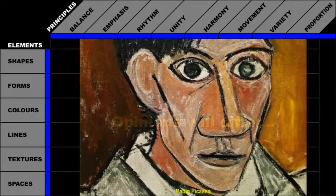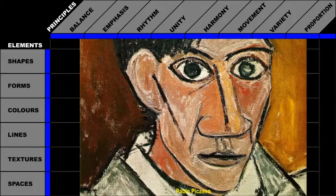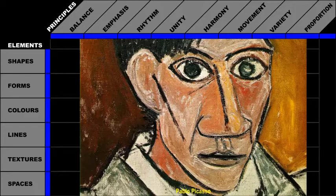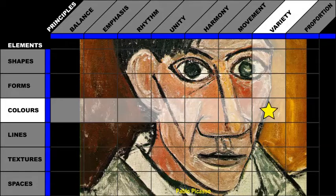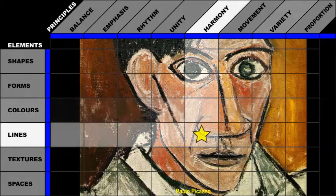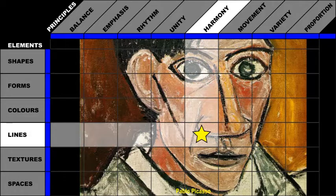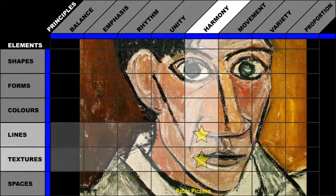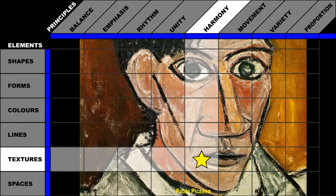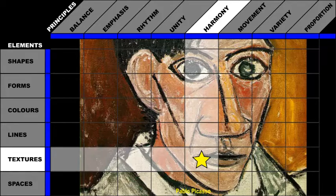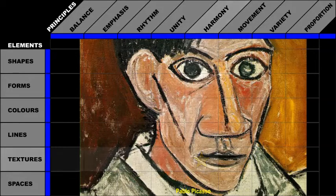Let's take a look at how Pablo Picasso used elements and principles of design in his self-portrait. He used a variety of colors in the skin tones and the background. He used harmonious lines. The rough black lines differ from each other, but they are still similar. He also used harmonious textures. Similarly, the rough brush strokes differ from each other, but they are all still similar.